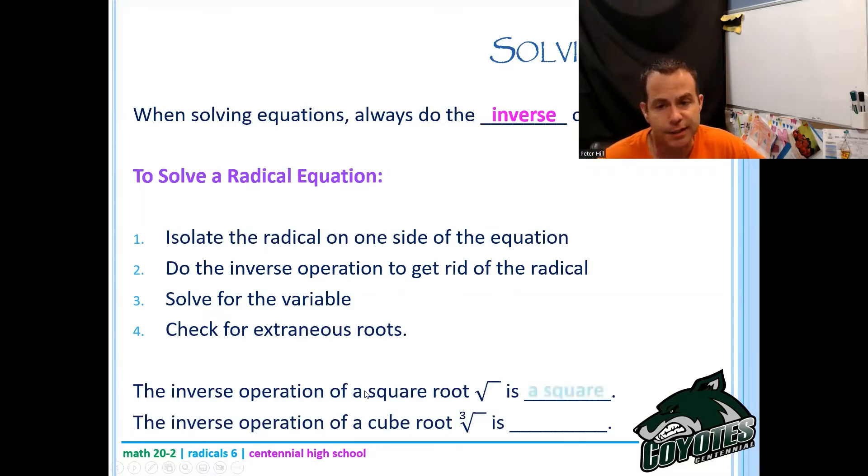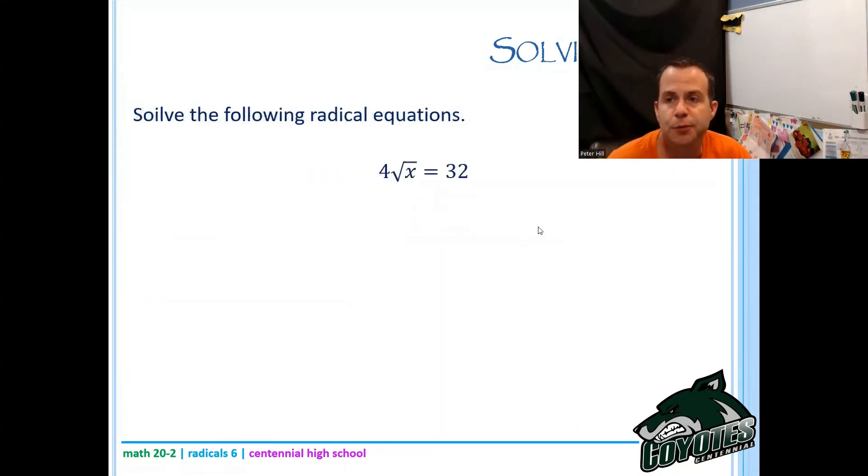The inverse operation of a square root is a square and the inverse operation of a cube root is a cube. So let's go through some examples together. The first one here is four root x equals 32.